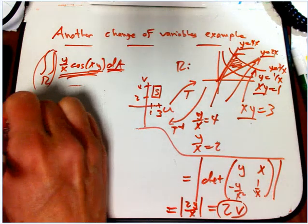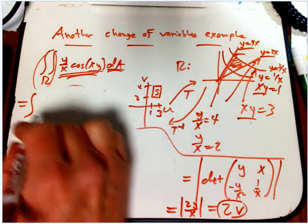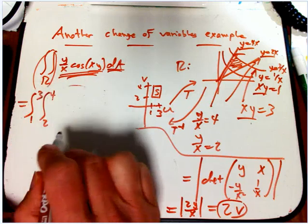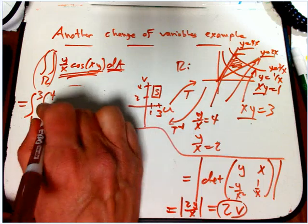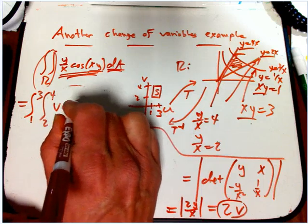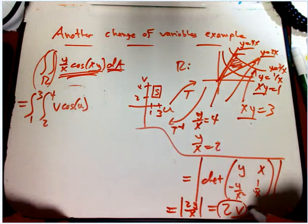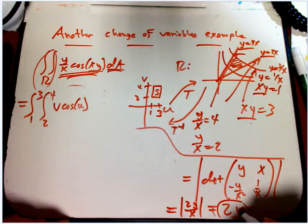So this is going to be the integral. Let's put the u first, let's say. It's 1 to 3, 2 to 4. y over x was v. xy was u. And then the dA, this was the du,dv over dx,dy.